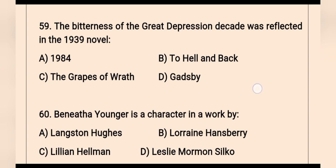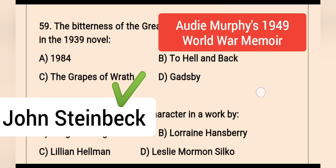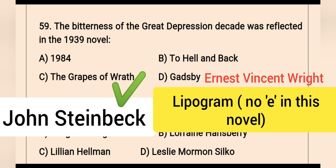Question 59: The bitterness of the Great Depression decade was reflected in the 1939 novel — the right option is The Grapes of Wrath. The Grapes of Wrath is an American realist novel by John Steinbeck, who won the Pulitzer Prize and the Nobel Prize. 1984 is the novel by George Orwell. To Hell and Back is Audie Murphy's 1949 World War II memoir. Gadsby is a novel by Ernest Vincent Wright which does not include any words containing the letter E — a work that deliberately avoids certain letters is known as a lipogram.